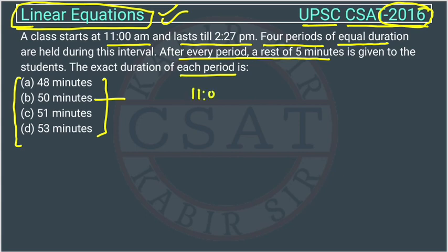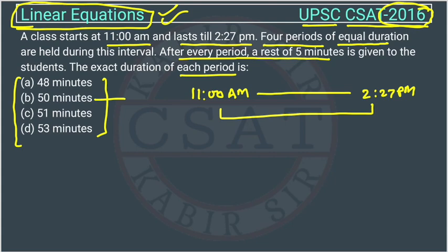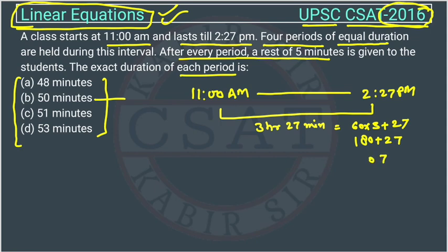At 11 a.m. the class starts and it goes till 2:27 p.m. Now, total how many minutes are there? It will be 3 hours and 27 minutes. In minutes it will become: 3 × 60 plus 27, which is 180 plus 27. So total minutes will be 207 minutes from 11 to 2:27 p.m. And in these minutes we have to arrange 4 periods.